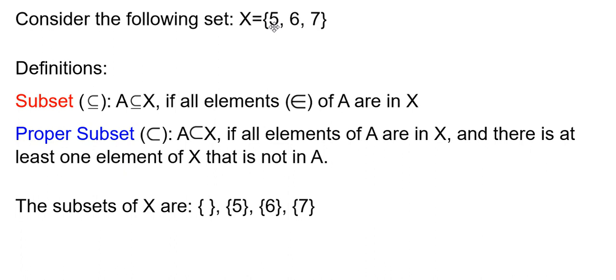Additionally, we could have 5 and 6, 6 and 7, and 5 and 7. Those are all also subsets. Additionally, we could have a subset that is the numbers 5, 6, and 7. And that would also be a subset.